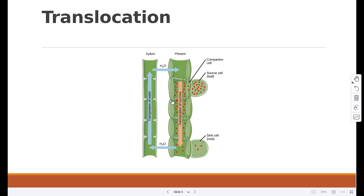And they are called sieve plates. So this right over here is called a sieve plate, which allows easy flow of substances from one cell to another. So the transport of sucrose and amino acids in phloem from regions of production to regions of storage or use is called translocation.